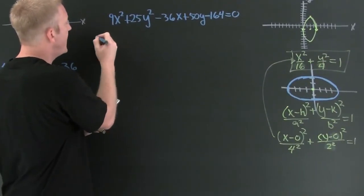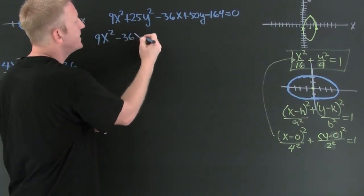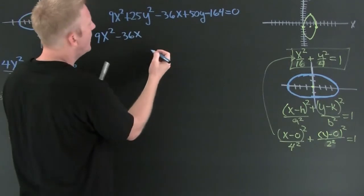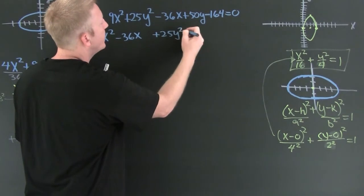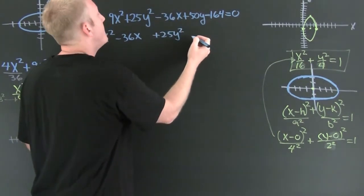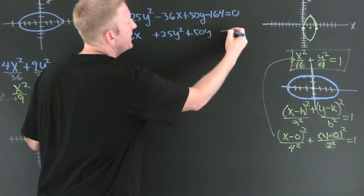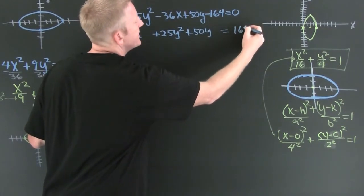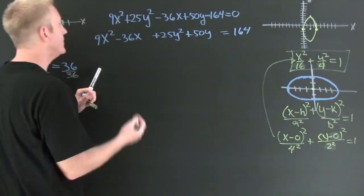I'm rewriting this guy. 9x squared minus 36x plus 25y squared plus 50y is 164. I commuted my terms and put my constants on the other side.